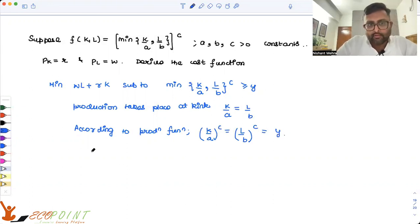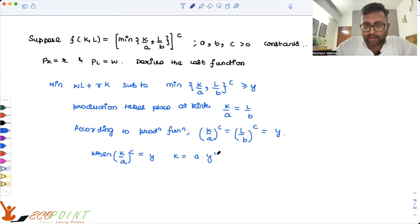So when k by a to the power c equals to y, then what is k equals to? It is equal to a into y to the power 1 by c. When l by b to the power c, that is equal to y, then what is l equals to? b into y to the power 1 by c.